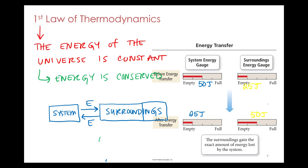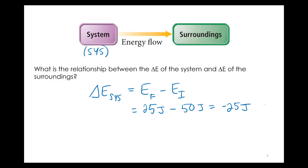So it started out at 25, ended up at 50. But of course, when we calculate delta E, it's going to be reversed, final minus initial. So our delta E for the surroundings, which we abbreviate SUR, imagine that.